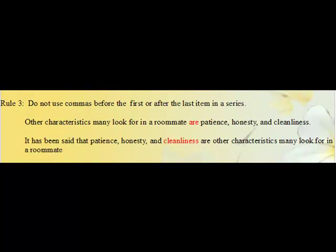Rule 3. Do not use commas before the first or after the last item in a series. For example: other characteristics many look for in a roommate are patience, honesty, and cleanliness — notice there's no comma before 'patience.' It has been said that patience, honesty, and cleanliness are other characteristics many look for in a roommate — notice there's no comma after 'cleanliness.'